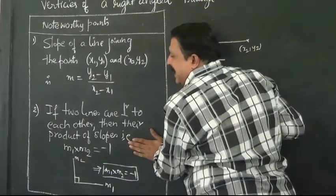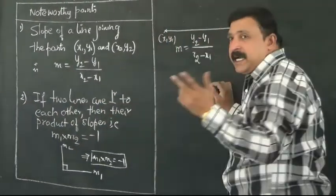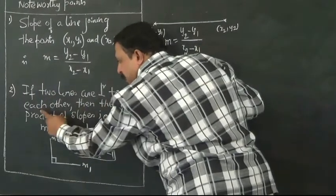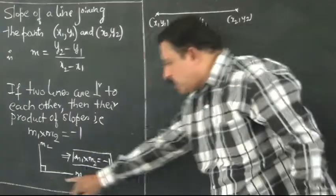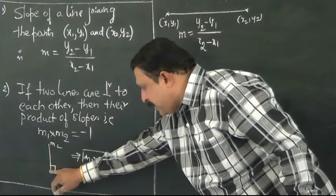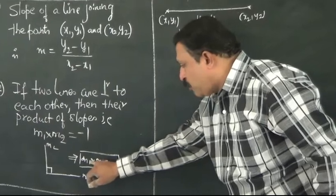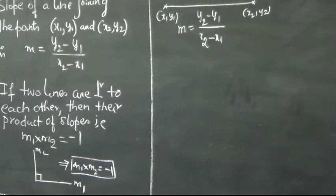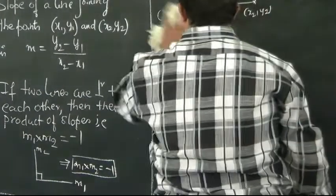The second point to be noted is that if two lines are perpendicular, you know that in a right-angled triangle two lines will be perpendicular. If two lines are perpendicular to each other, then the product of slopes is equal to minus 1. This is a line with slope m1, this is the perpendicular line with slope m2, then m1 into m2 is equal to minus 1. Both these points are used to solve this problem. Now let's begin.